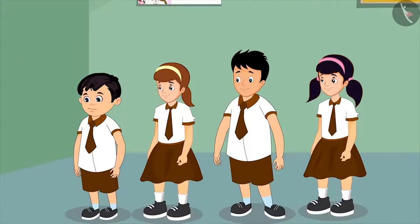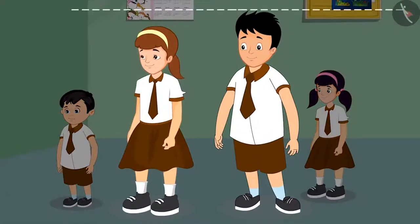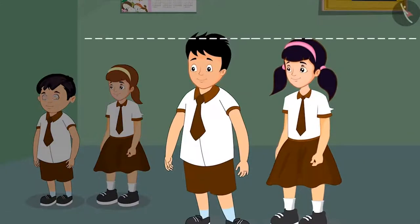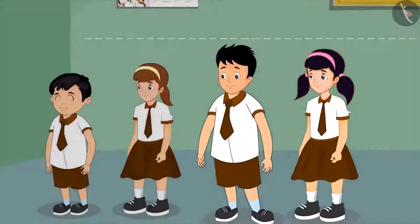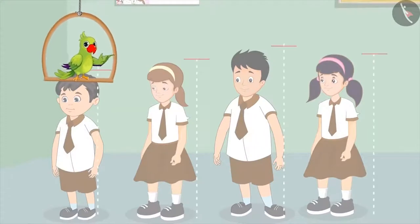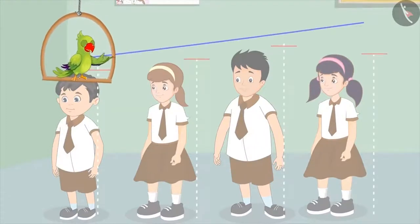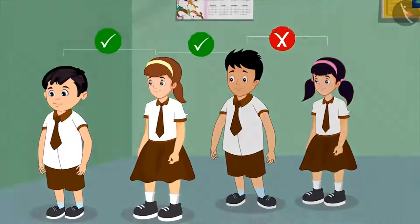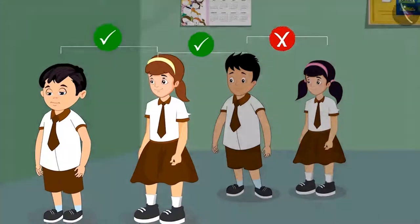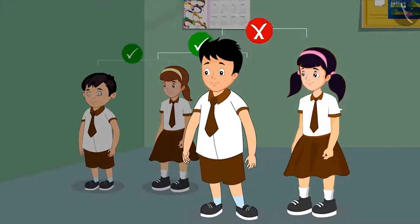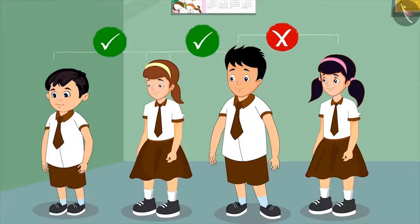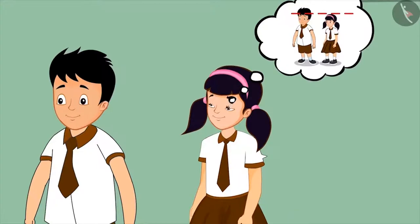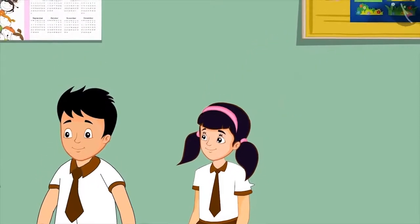But Sonu just notices that he is taller than Neha, but fails to notice that Aarti is shorter than him. So children, are Chotu and his friends standing in the correct order of height? Chotu and Neha are standing in the right order, but Sonu and Aarti are not. Aarti realizes this as she is not able to see anything standing behind Sonu.